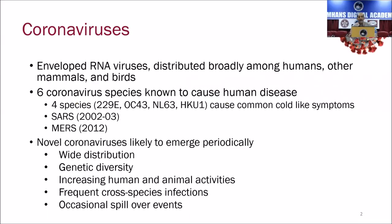Coronaviruses are enveloped RNA viruses. They are widely present in the universe. As far as humans are concerned, we know that there are at least 6 coronaviruses that cause human disease prior to December 2019. Four of these cause simple common cold-like symptoms, mild self-limiting infections. In 2002-2003, we had a severe acute respiratory syndrome that emerged from the southern part of China.